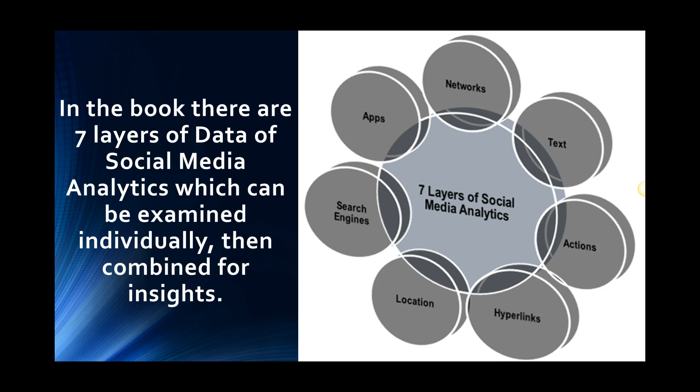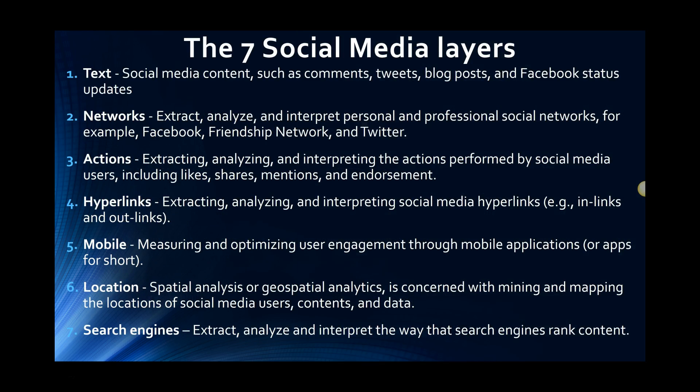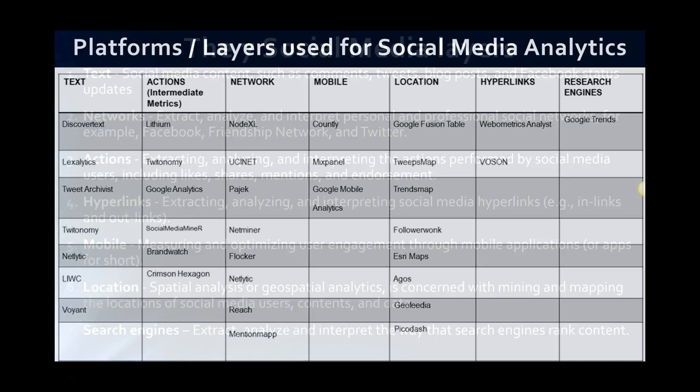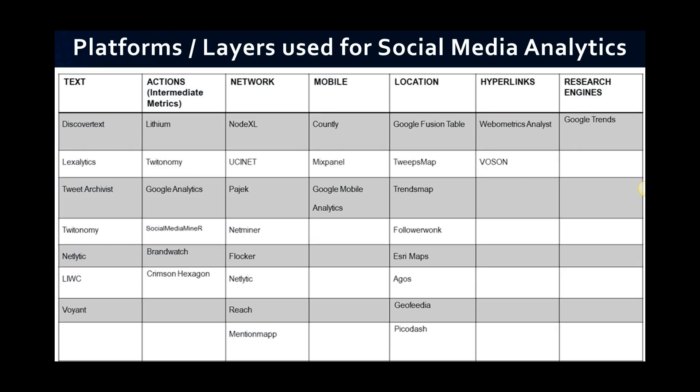The seven lenses are: networks, text, actions — which we call intermediate metrics — hyperlinks, locations, search engines, and apps. Here's an explanation of each of them, and I think a lot are self-explanatory. He also addressed platforms in his first book, which this book builds on. Actions are intermediate metrics. We were looking at tools that examine layers of data so we could cut apart this unstructured and semi-structured social media data and look at it that way to get more out of it.